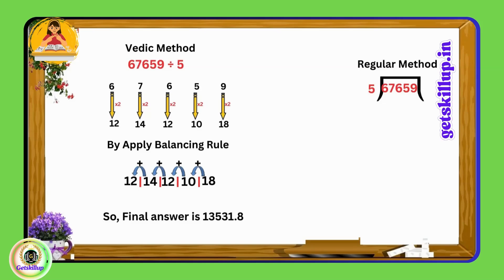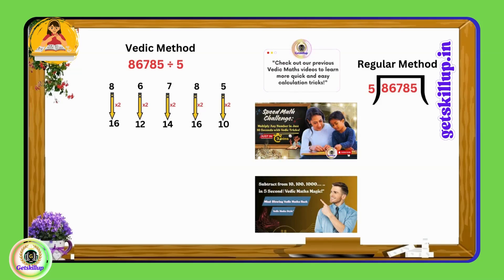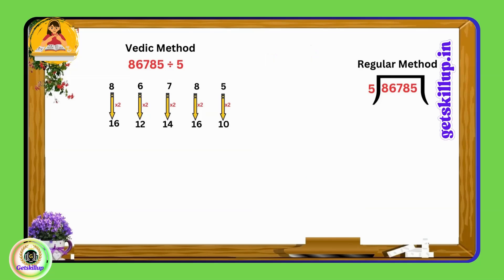Let's try one more example: 86785 divided by 5. In the first step we double each digit: 16, 12, 14, 16, and 10. Now applying the balancing rule we keep 0 as it is and add the adjacent digits.